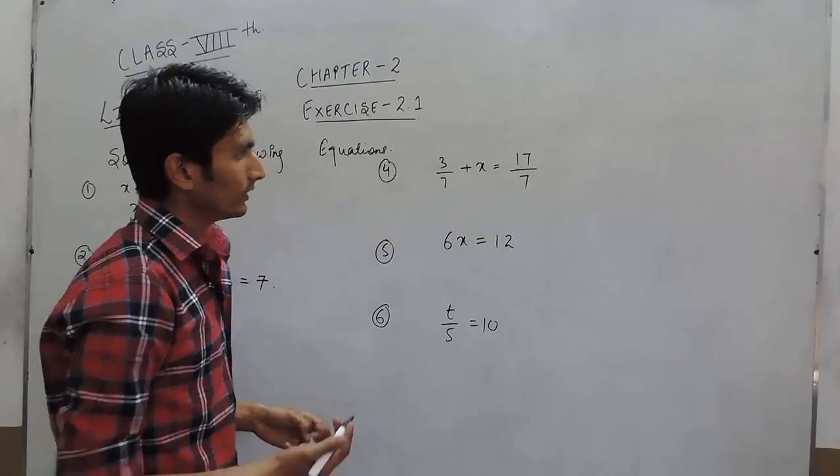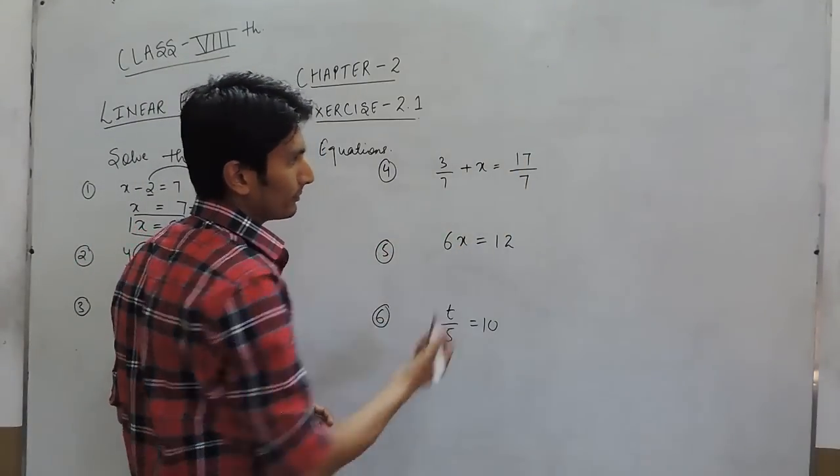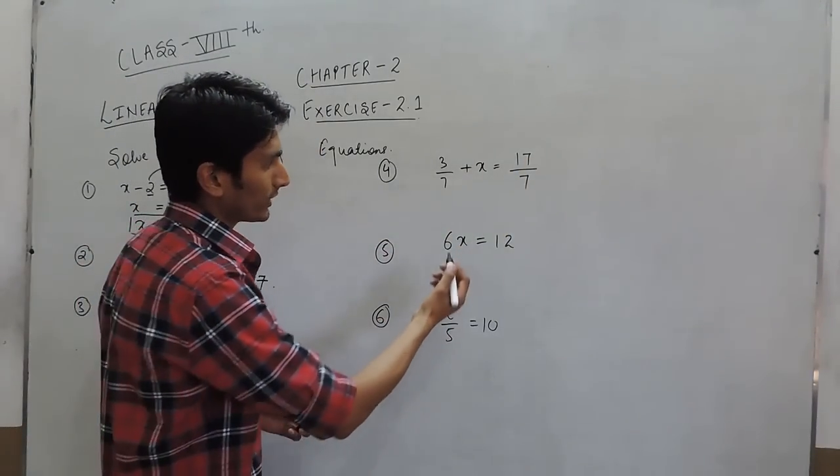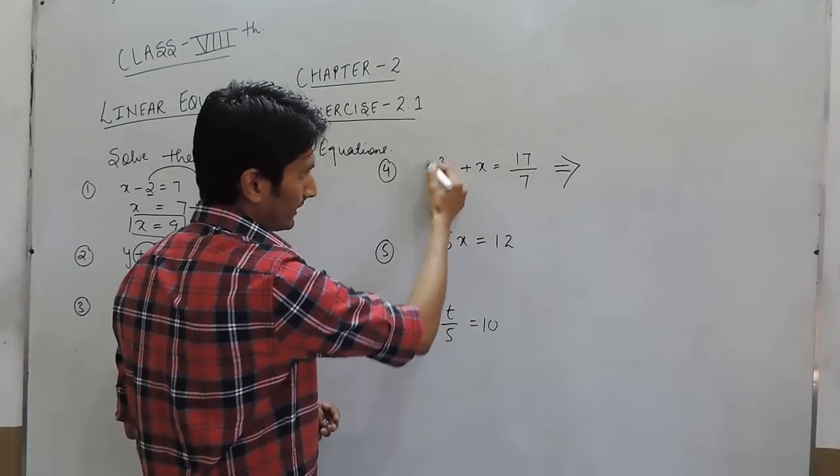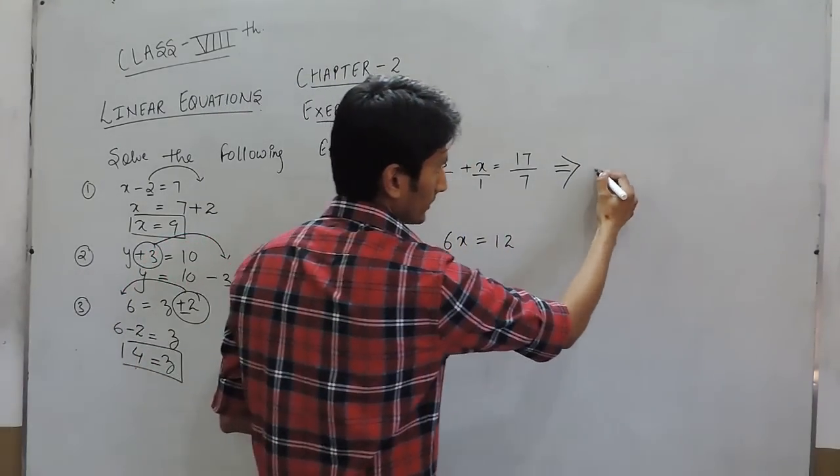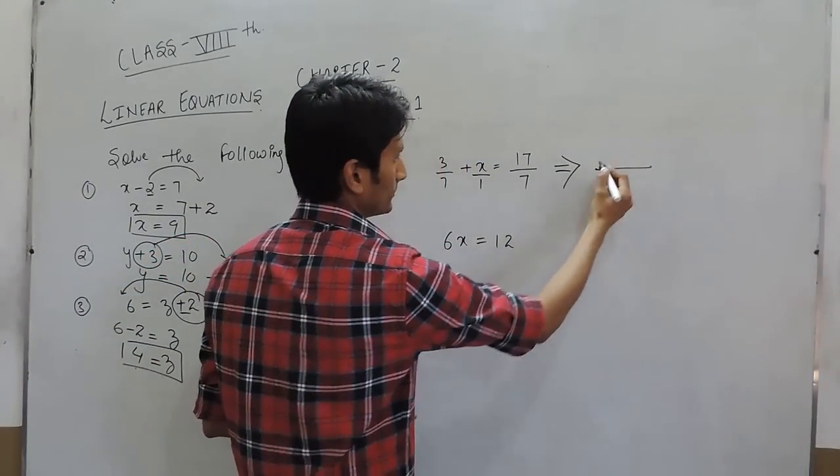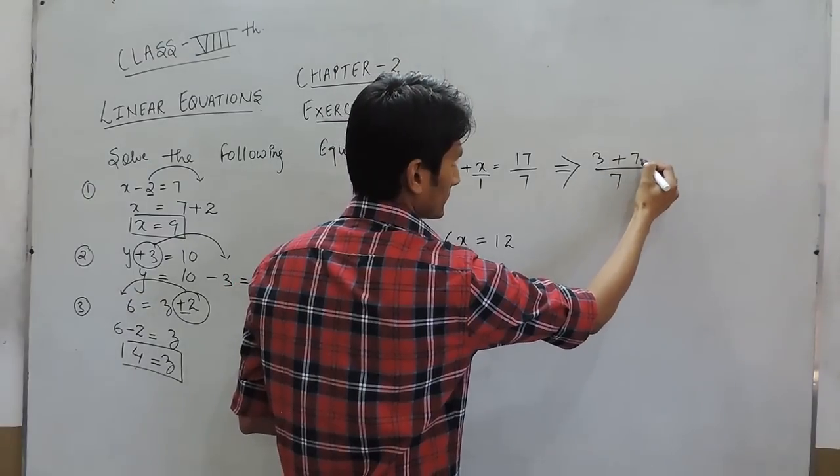In this question, before taking variable or constant to the other side, we have to take the LCM. By taking LCM of this, 7 is the LCM. We have 3 and 7x, then we have to cross multiply it.